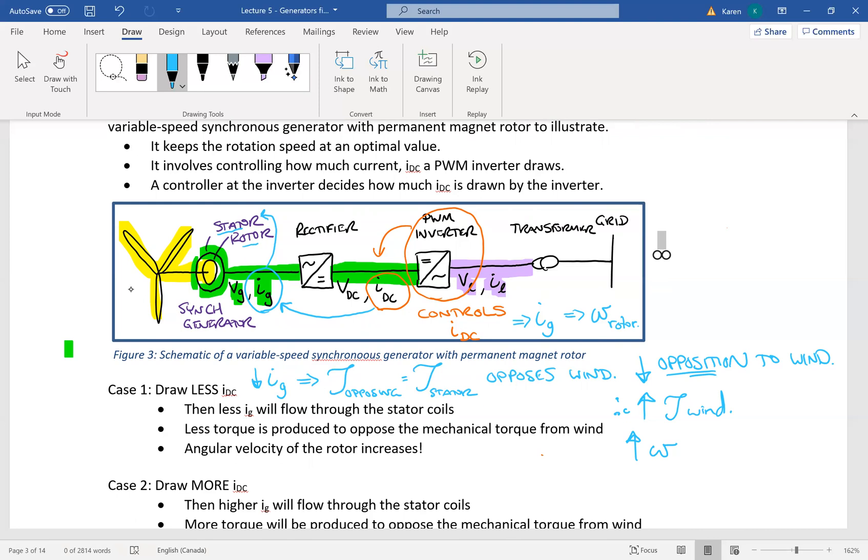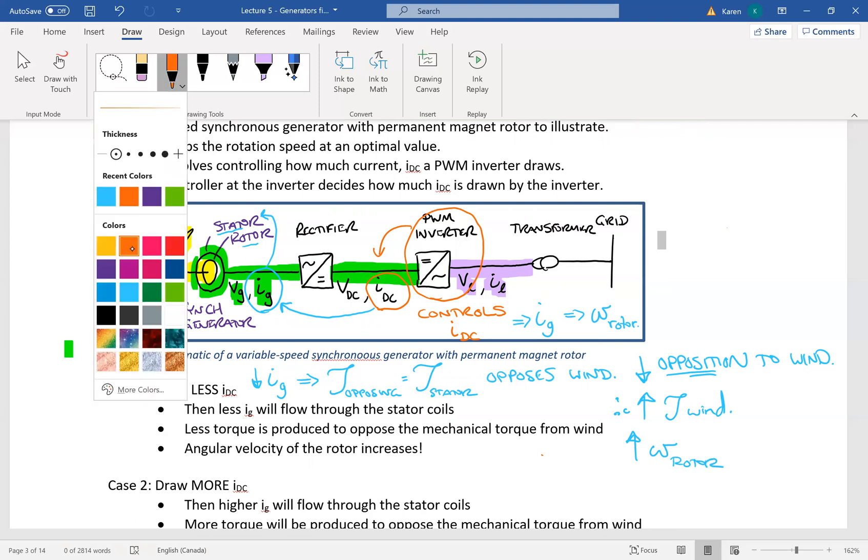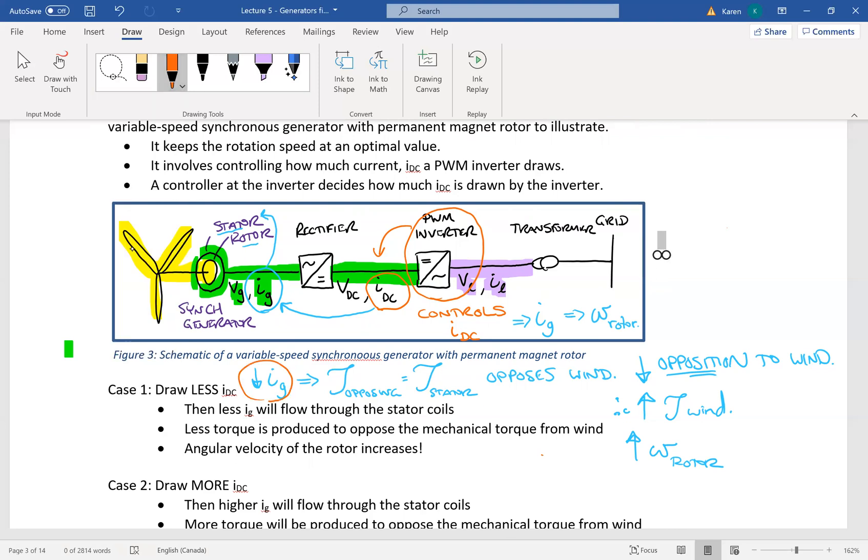So that, of course, is a rotation that you will see in the rotor. So what has happened here is you have decreased this current going into the stator has had an effect of increasing the angular velocity of the rotor.